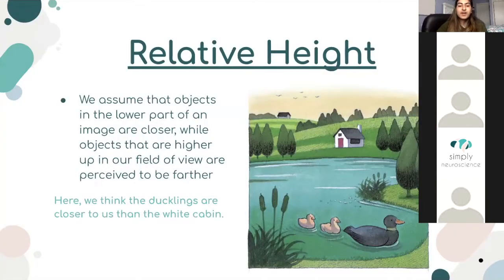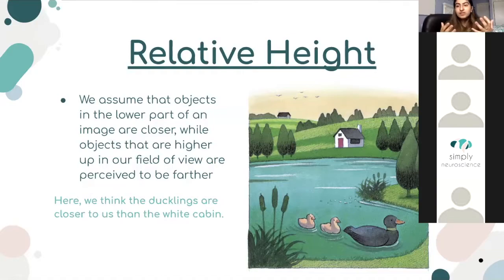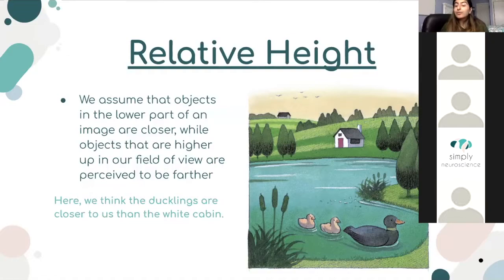The first monocular depth cue is relative height. We assume that objects in the lower part of an image are closer, while objects that are higher in the field of view are further away. If we look at this picture, we think the ducks are a lot closer to us because they're more towards the bottom of the picture, and we assume the trees and the house are further away because they're at the top of the picture.